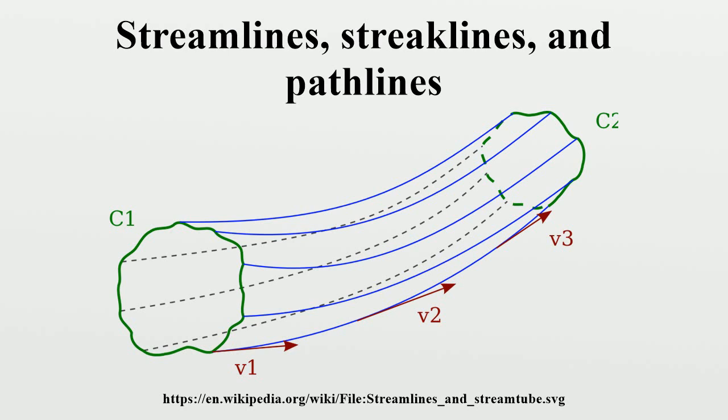Pathlines are the trajectories that individual fluid particles follow. These can be thought of as recording the path of a fluid element in the flow over a certain period. The direction the path takes will be determined by the streamlines of the fluid at each moment in time.